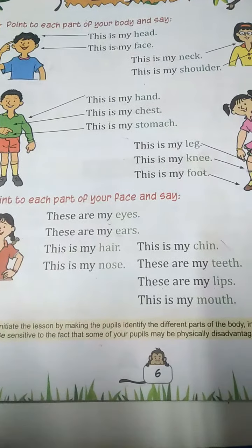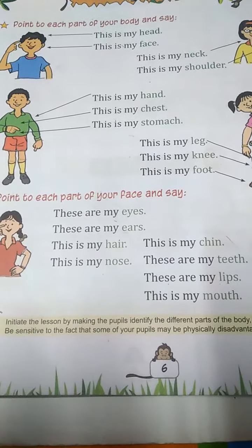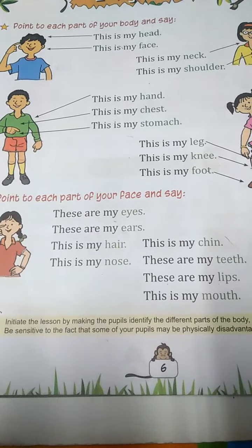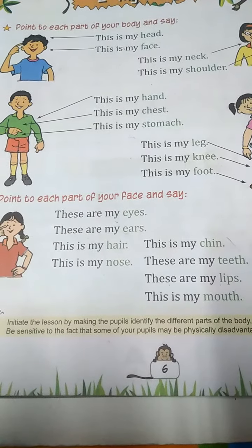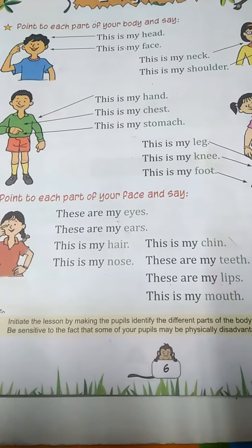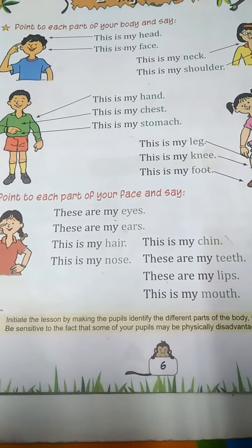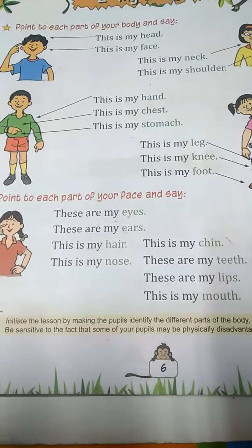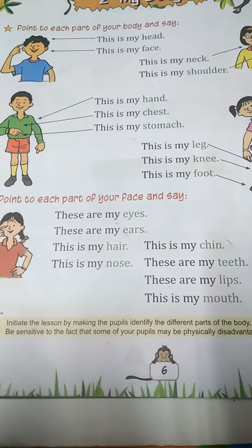When it is only one, we should say 'is.' More than one, 'are.' These are, this is. When it is single: this is. When it is more than one — two, three, four, five — we have to say 'these are.'